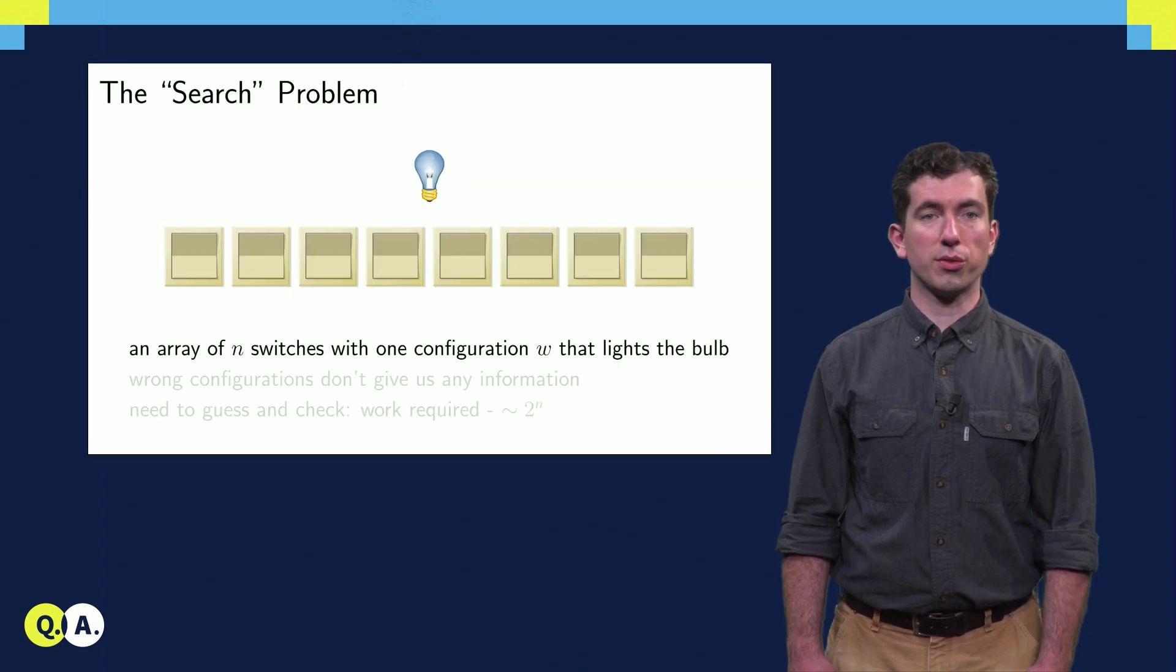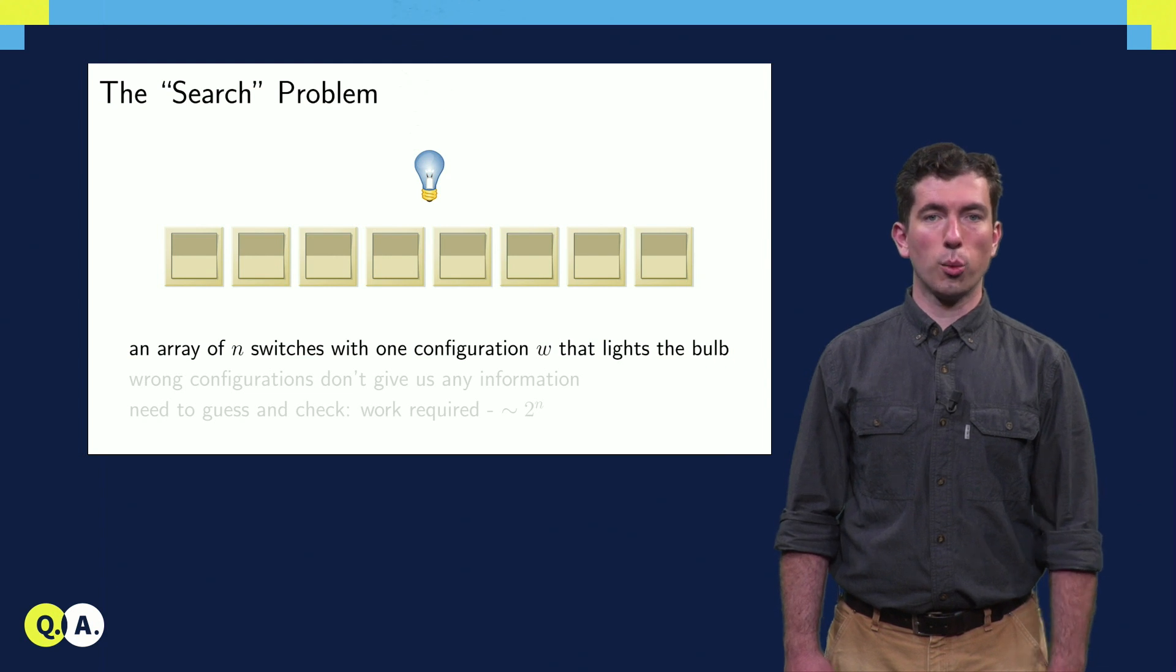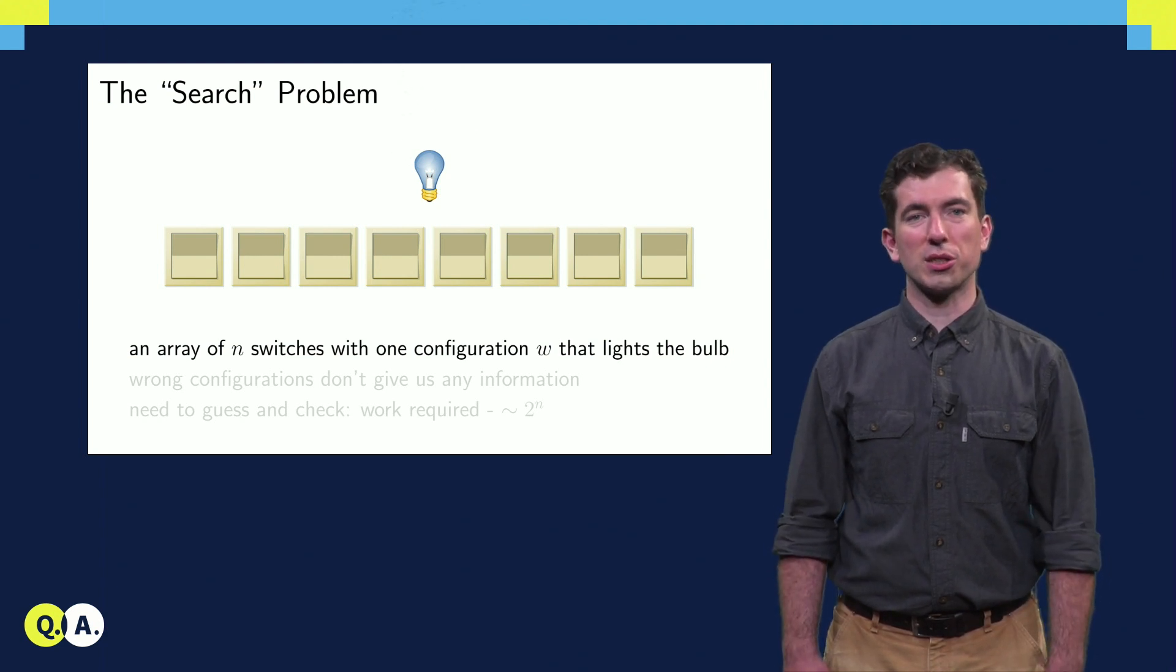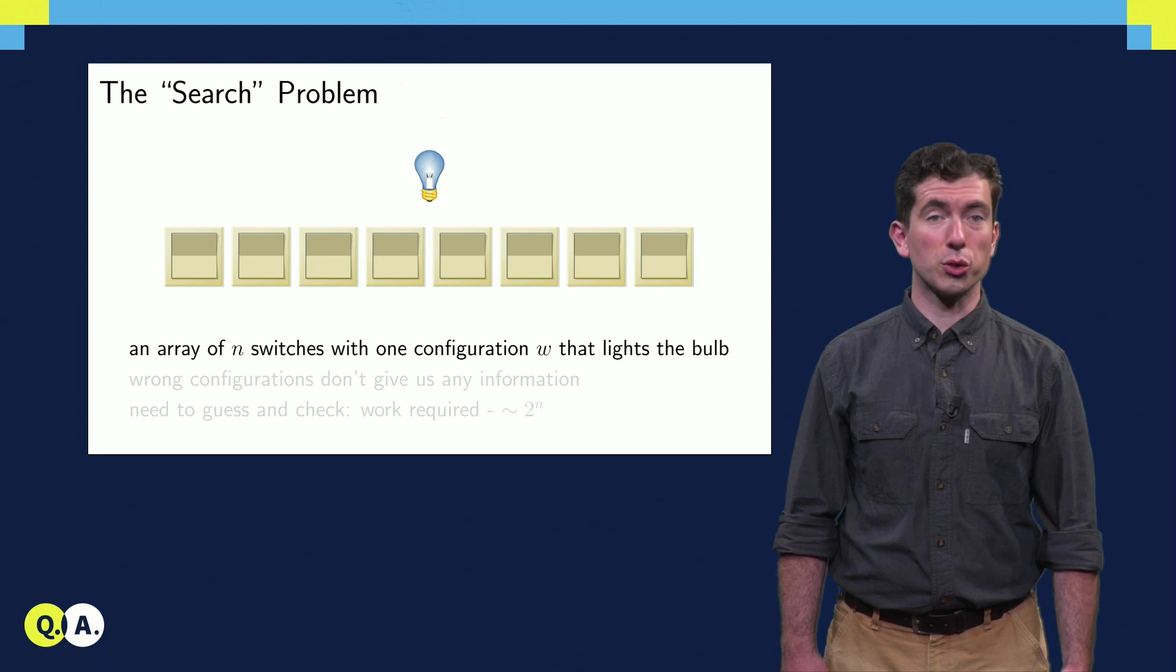The problem to be solved is as follows. Imagine that there's an array of N switches which all have to be set in a correct configuration W in order to light a bulb. Now, to make the problem difficult, some of these switches have been installed upside down and there's no manual lying around, so the all-up configuration isn't necessarily correct as it should be.